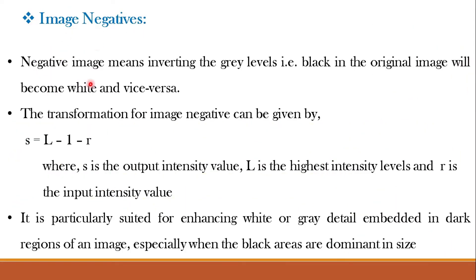Image negative means inverting the grayscale values or grey levels — that is, black in the original image will become white and vice versa. Digital negatives are useful in many applications; a common example is the X-ray image. The transformation for image negative is given by S = L − 1 − R. We are reversing the intensity levels of an image to produce the equivalent of a photographic negative. S is the output intensity level, L is the highest intensity level, and R is the input intensity level. This is a type of intensity transformation or point processing, extending the techniques discussed in the previous class.